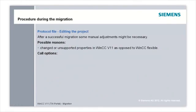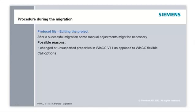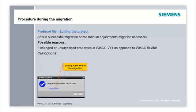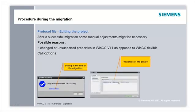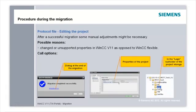After a successful migration, some manual adjustments might become necessary. Possible reasons include non-supported or changed objects, properties not realized in WinCC version 11 or realized differently than in WinCC Flexible, stricter criteria for checking tag addresses, or the length of object names in WinCC version 11. Object names in WinCC version 11, for example, need to be unique throughout the project — a picture name, even if located in a subfolder, can only be used once. Information on this is available in the migration log, which can be displayed via the dialog at the end of the migration, or via the properties of the project in the project directory in the logs subfolder.